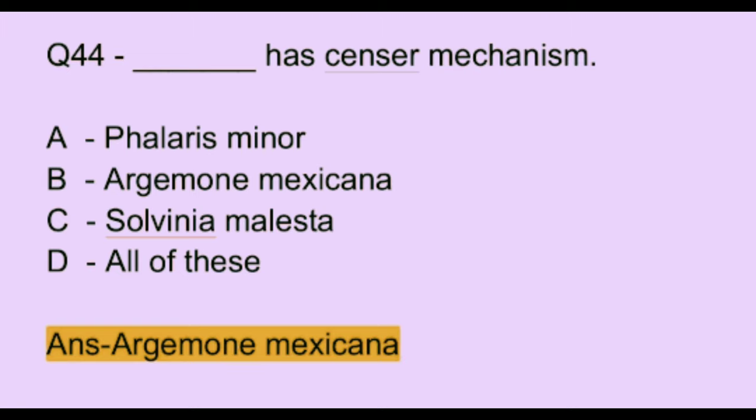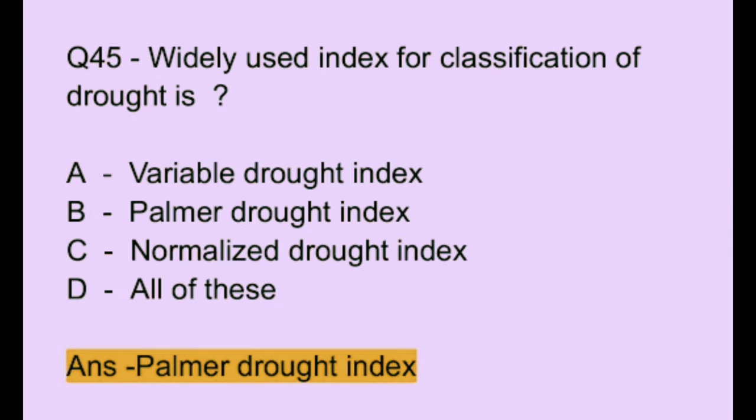Question number 44. Which of the following has a sensor mechanism? Option A: Filiaris minor. Option B: Argemone mexicana. Option C: Salvinia molesta. Option D: all of these. The correct answer is option B, which is Argemone mexicana.